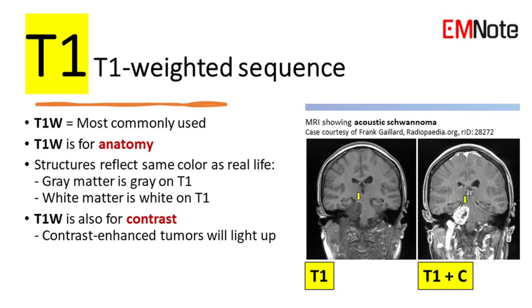T1 Weighted Sequence is the most commonly used MRI sequence. It provides excellent anatomical detail and is used for anatomical reference. In T1 Weighted Images, gray matter appears gray and white matter appears white, reflecting the same color as real life. T1 Weighted Sequence is also used for contrast administration, as contrast material is taken up by masses, making them light up and easier to see.